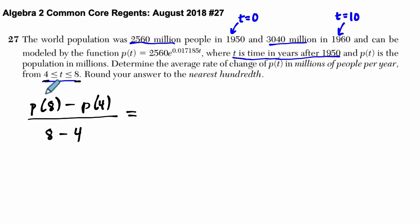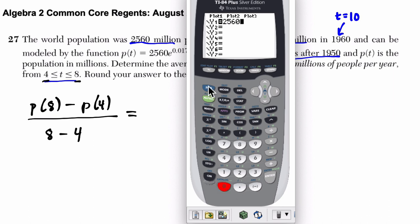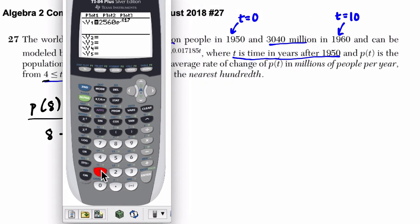That's one way to do it manually. But I would suggest that you look at a calculator here. If you go to y equals, clear up any old functions, I'll type 2560, and then save yourself some time, second, ln, that sets you up with an exponent. .017, 185x.